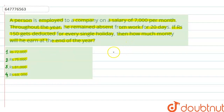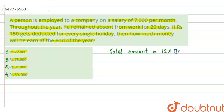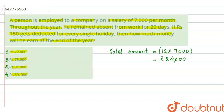First of all, Rs. 7,000 per month. So the total amount — Rs. 7,000 multiplied by 12 months — without any deduction, the total comes to Rs. 84,000.